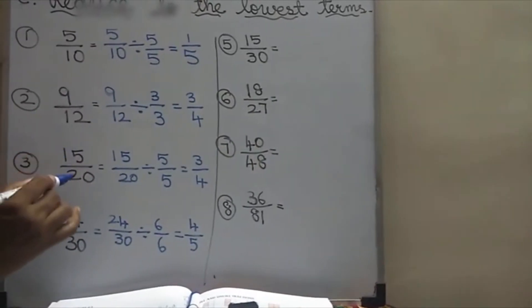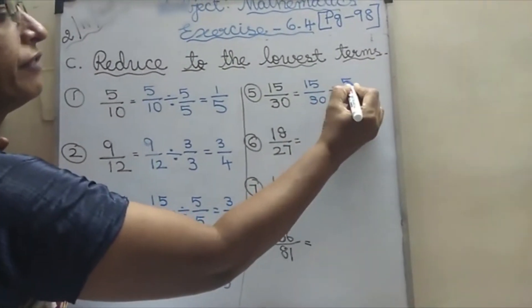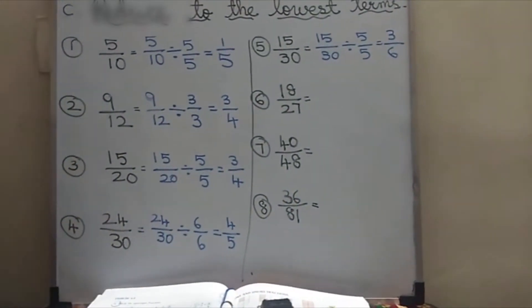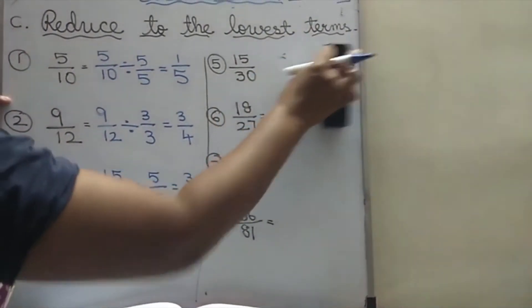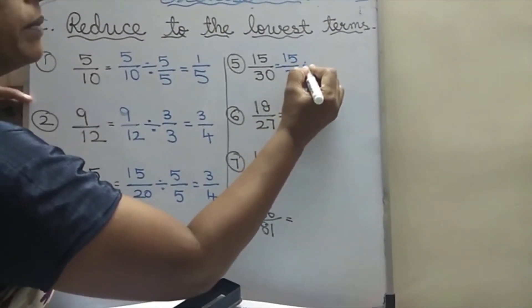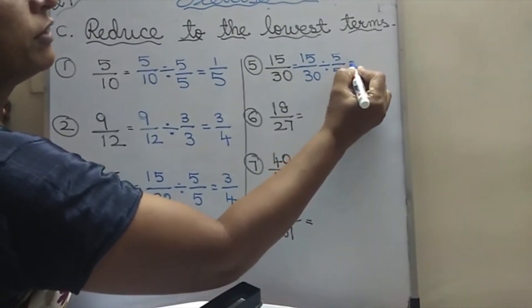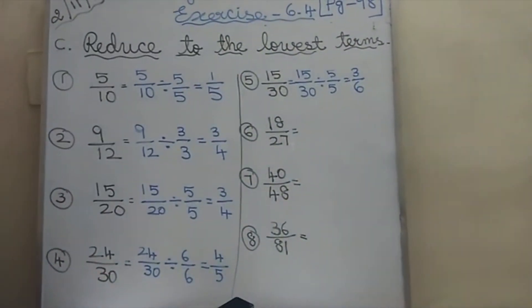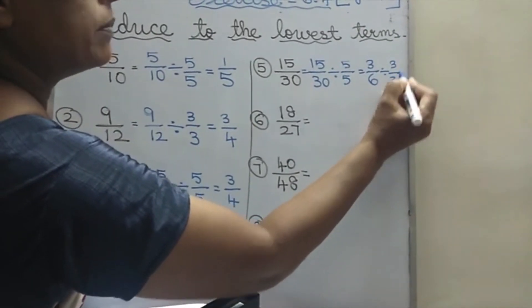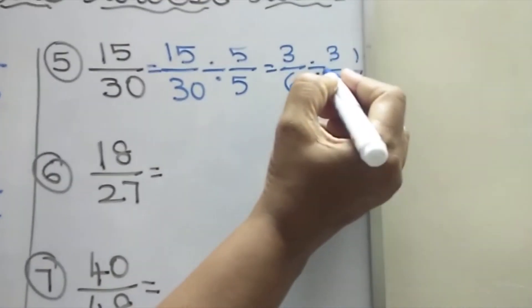15 by 30 goes in 5 tables: 5 by 5. 5 3s are 15 and 6 5s are 30. But again this can be divided. In 3 tables — 3 goes, and this also goes in 3 tables. So the answer will come: 1 by 2. 3 by 6 was the first answer, and this 3 by 6 can be divided again by 3: 1 3 is 3, and 3 2s are 6. So the answer is 1 by 2.